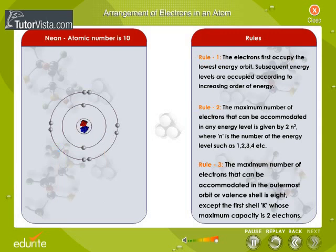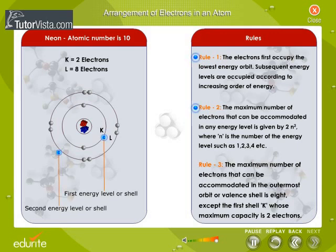Neon has 10 electrons around its nucleus. According to rules 1 and 2, the maximum capacity of the first K shell is 2 electrons. Hence, 2 electrons will occupy the first energy level or shell, and 8 electrons will occupy the second energy level or shell.